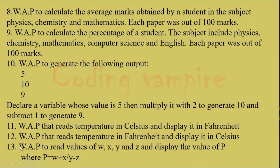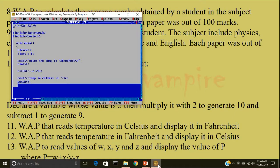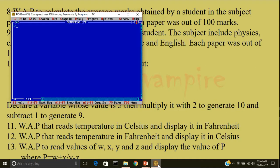The next question is: Write a program to read value of w, x, y and z and display the value of p. Where p is equal to w plus x by y minus z. You have to accept the value of w, x, y and z and display and compute the value of p.